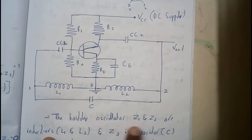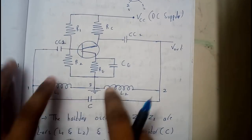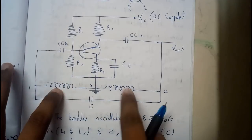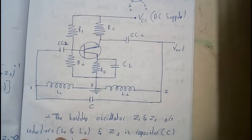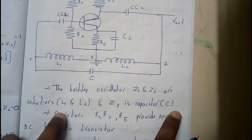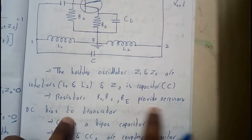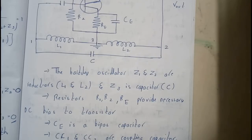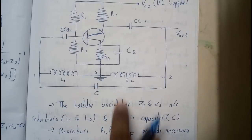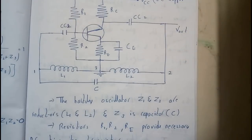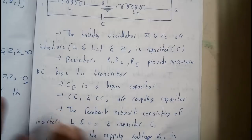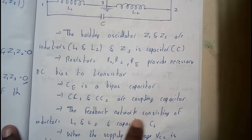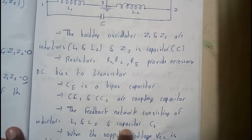In the Hartley oscillator, Z1 and Z2 are inductors. Referring to the tank circuit we drew previously — Z1, Z2, Z3 — Z1 and Z2 are replaced by two inductors L1 and L2, and Z3 is replaced by a capacitor C. Resistors R1, R2, and RE provide the necessary DC bias to the transistor. CE is a bypass capacitor, and C1 and C2 are coupling capacitors.